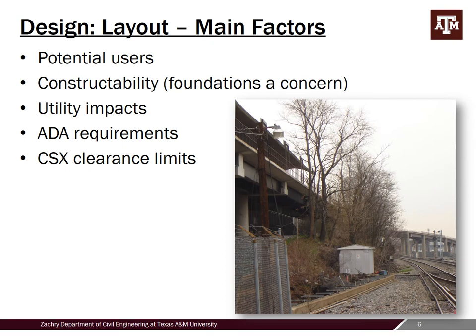The main factors that went into the layout: first and foremost, the potential users were at the focus — seeing where they wanted to come to and from, because if you make the facility such that people have to go out of their way to use it, they most likely will not bother. We tried to stay in line with existing paths people were already using. Constructability is a big one — we had very limited space to land these foundations. We needed to land our pier behind the utility shed.